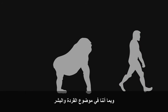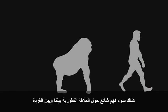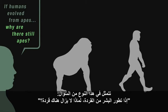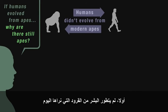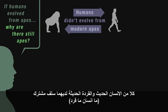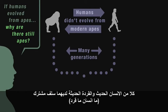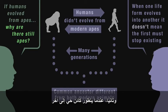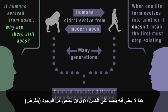While we're on the subject of apes and humans, there's a common misunderstanding about our evolutionary relationship with apes, revealed by the question: if humans evolved from apes, why are there still apes? Firstly, humans didn't evolve from the apes we see today. Humans and modern apes share a common ape-like ancestor different from both modern animals. But secondly, when one life form evolves into another, that doesn't mean the first life form has to stop existing.